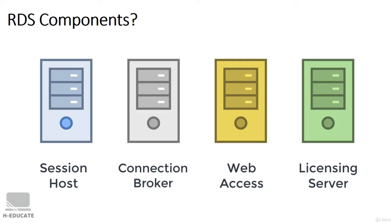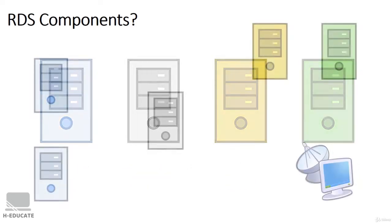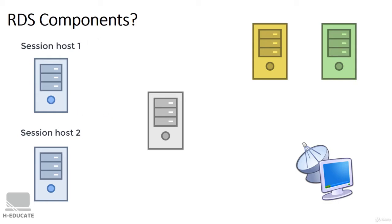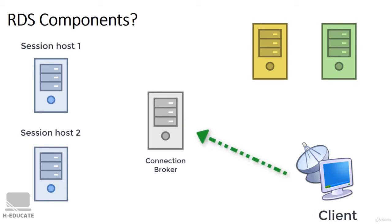To understand the concept more, let's take an example scenario. We have two Remote Desktop Session Hosts hosting our sessions in what we call an RDS farm. An RDS farm is where we configure multiple servers to work together so we can provide load balancing or fault tolerance. We have a Connection Broker that acts as a middleman between the client machine and the RDS farm. The client connects to the Connection Broker first and the broker refers the client to one of the session hosts in the farm according to your configuration, so the user can access a certain resource on the servers.